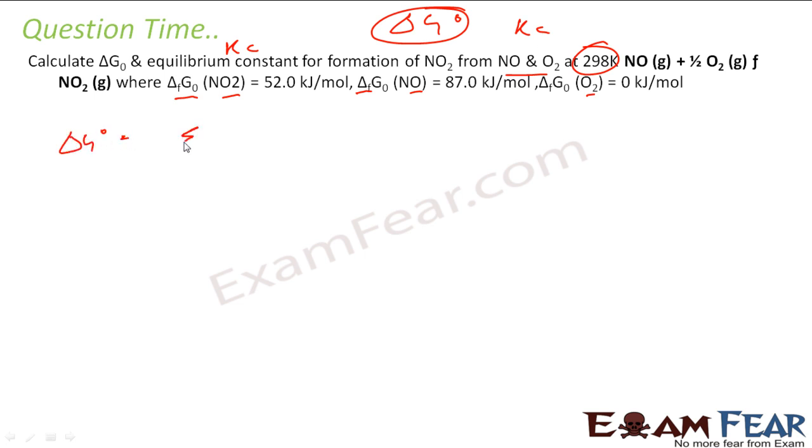So let us find delta G naught for the whole reaction. This will be nothing but delta G naught of products minus delta G naught of reactants. This concept is something which we learned in the last chapter.